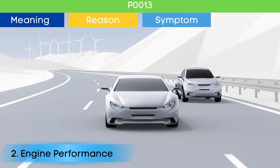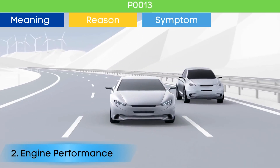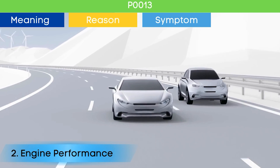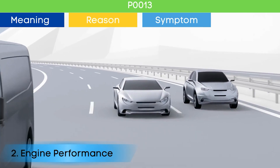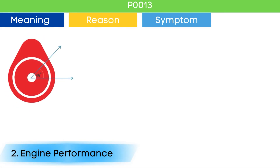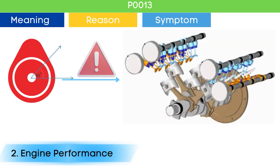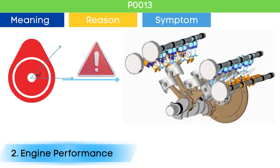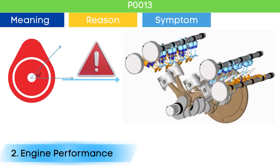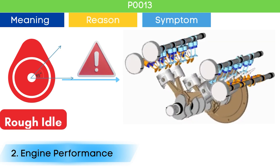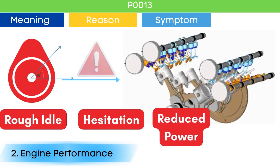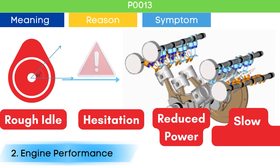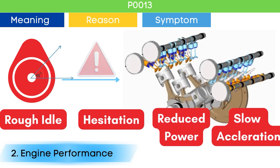Symptom number two: poor engine performance. Problems in the cam position actuator circuit can lead to incorrect cylinder valves opening and closing. This can manifest as rough idle, hesitation, reduced power, and sluggish acceleration.